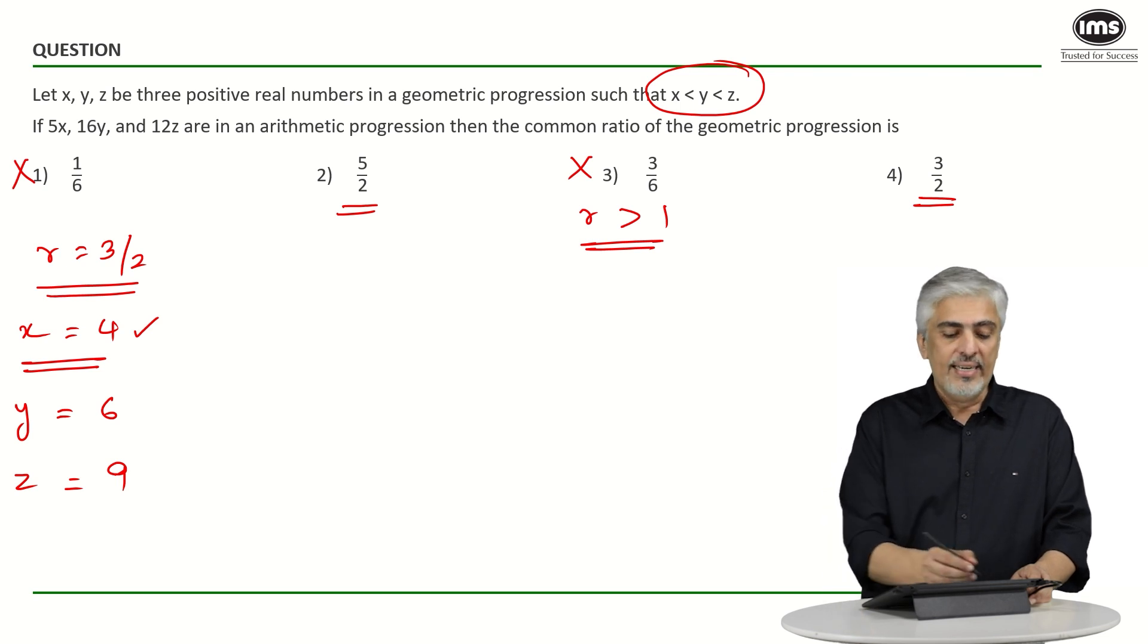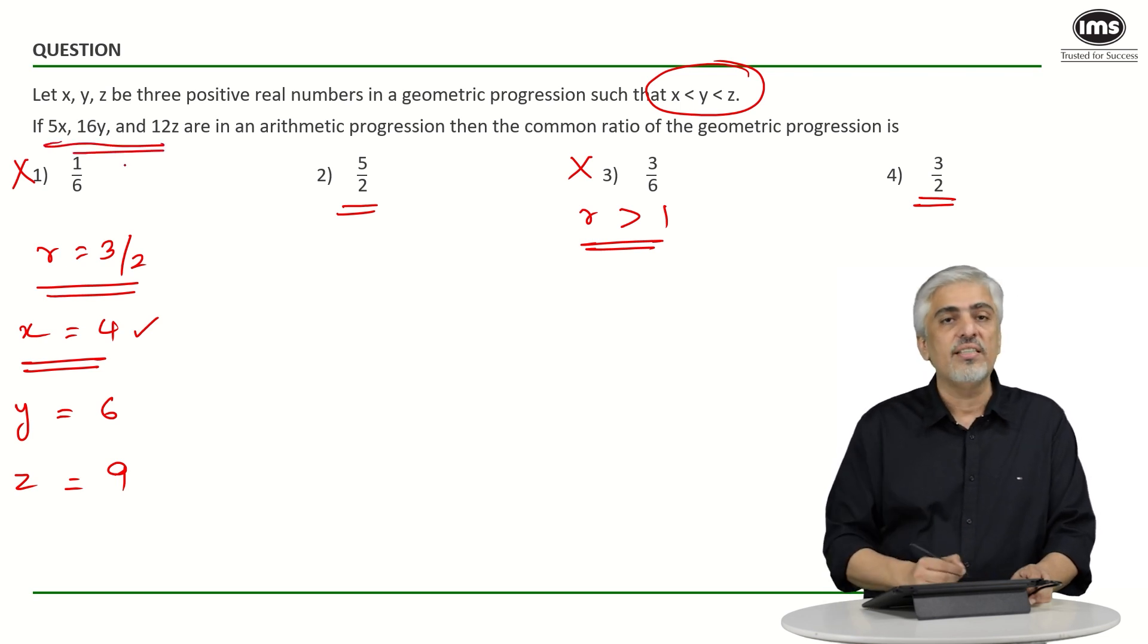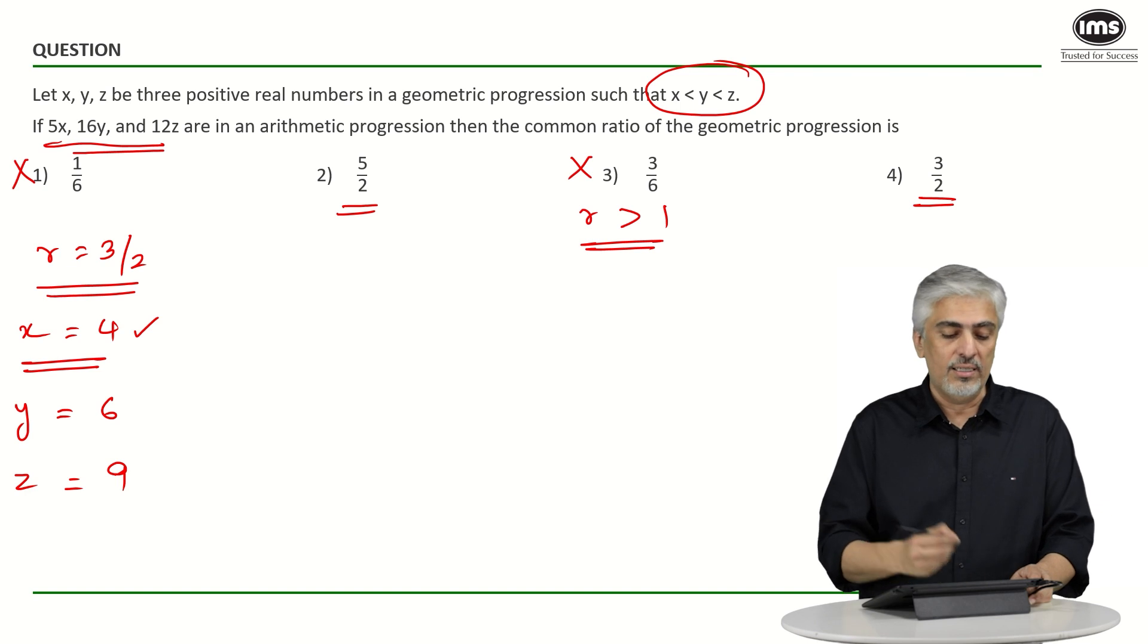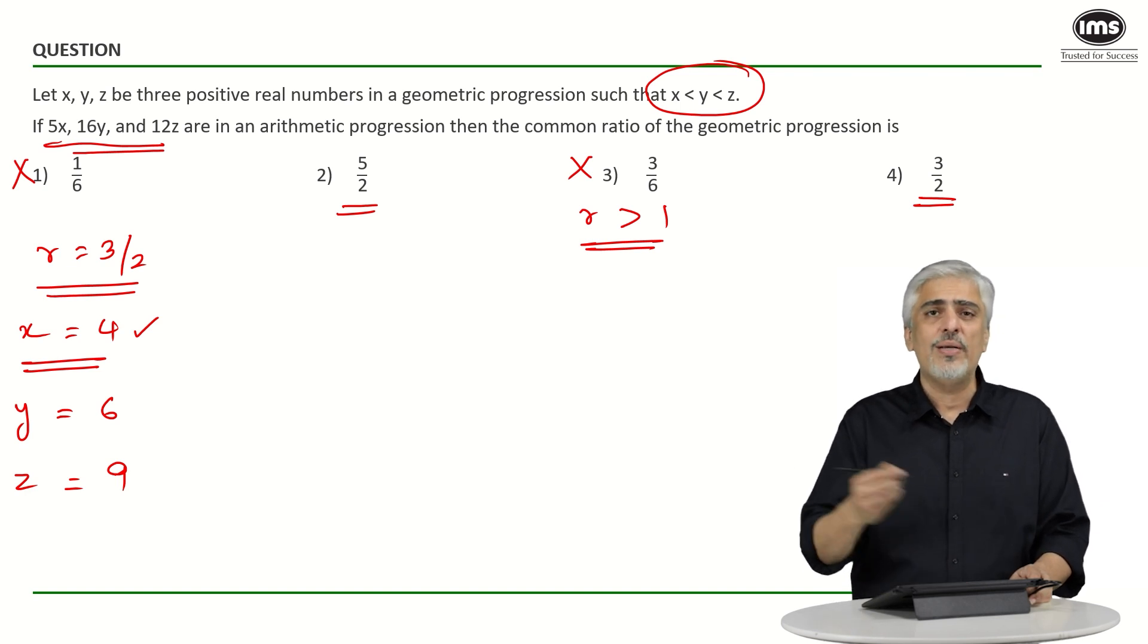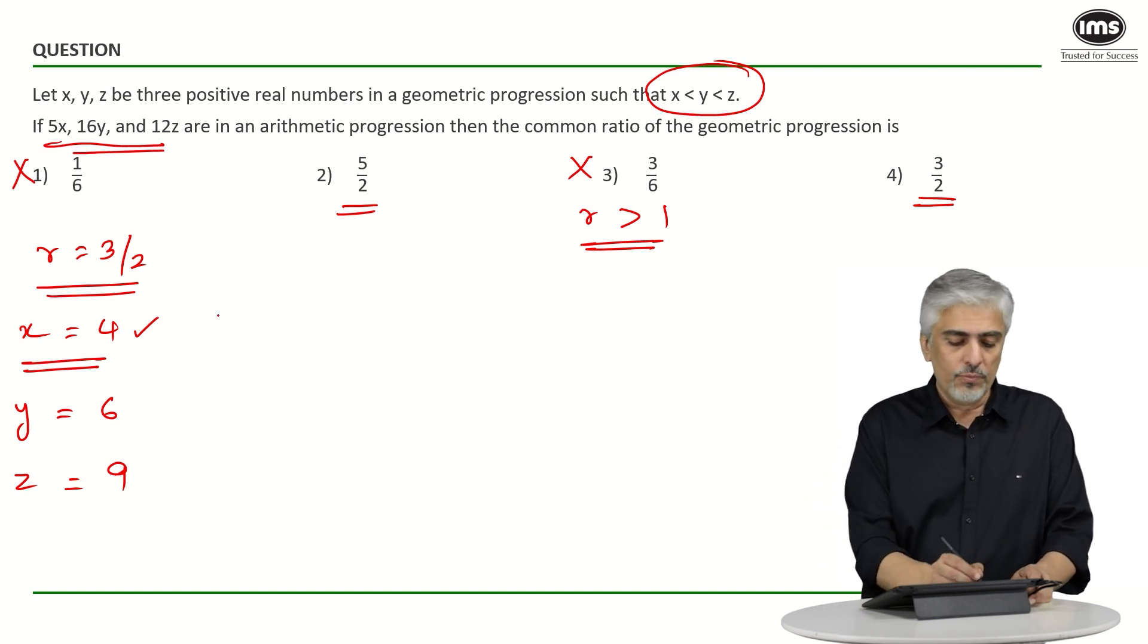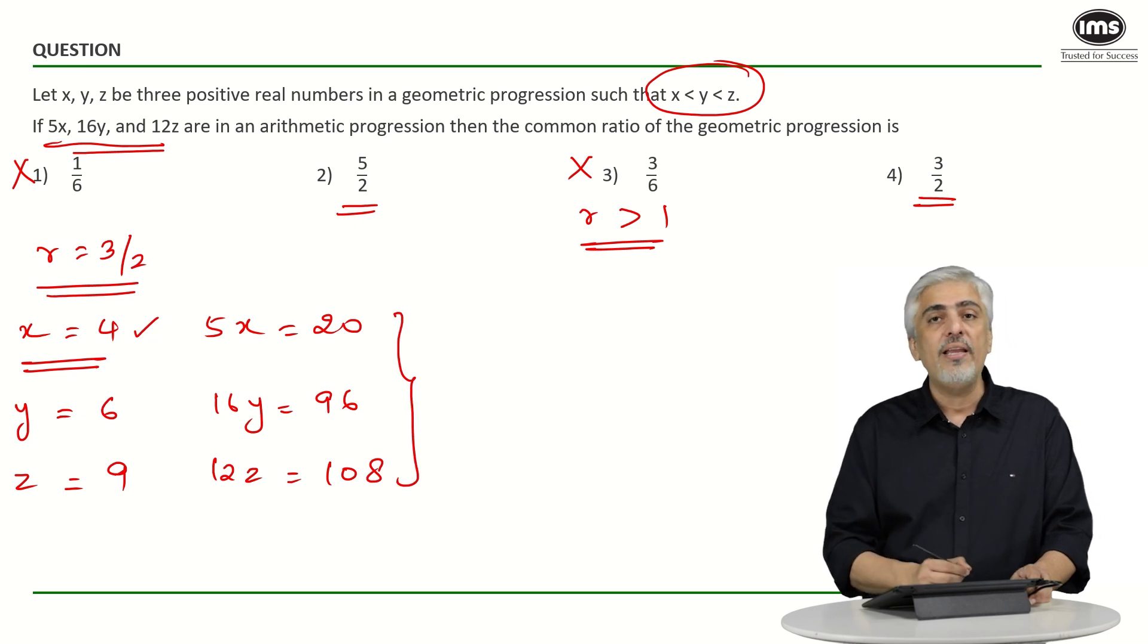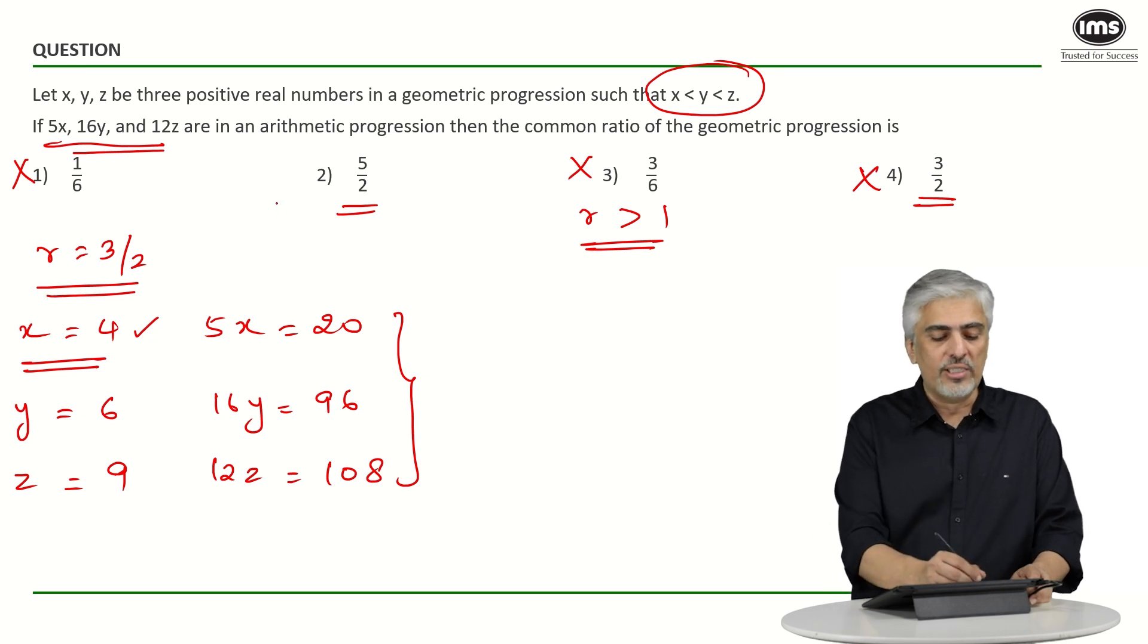Assuming x as 4, I have got y as 6 and z as 9. Does it satisfy this condition that 5x, 16y, and 12z are in AP? What will be 5x? 5x will be 20. 16y will be 96, and 12z will be 108. So this is not an AP.